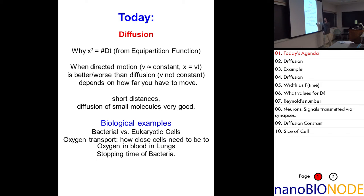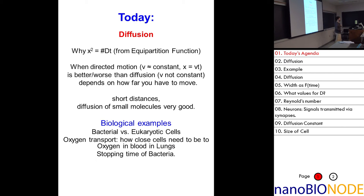A eukaryotic cell tends to be larger than a bacterial cell, so to go from one end of a eukaryotic cell to another, diffusion takes too long, and for that reason they need things like molecular motors. Bacteria don't have molecular motors; eukaryotic cells do.